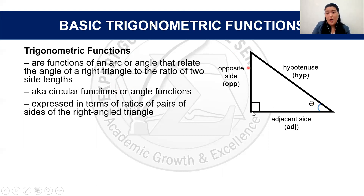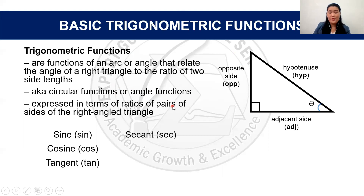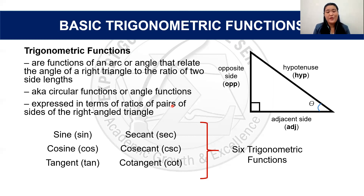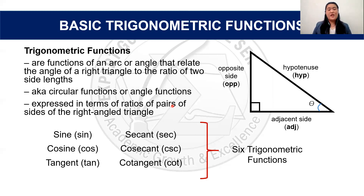The six basic trigonometric functions are: sine, denoted by SIN; cosine, denoted by COS; tangent, denoted by TAN; secant, denoted by SEC; cosecant, denoted by CSC; and the last one, cotangent, denoted by COT. Later on, we will be discussing the relationship of the six among themselves.